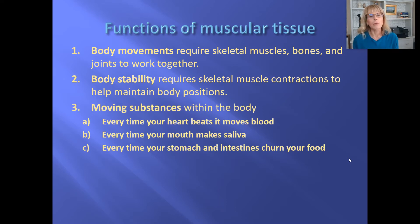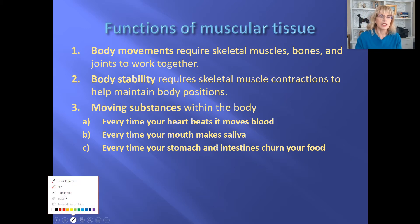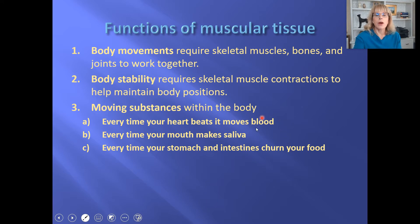But muscular tissue does so much more than what we think of as muscles like the biceps do. Muscle physiology allows muscles to move substances inside of the body. So every time your heart beats, that is muscle contraction that's pushing blood through all of your blood vessels. When your blood pressure goes up, it's because of smooth muscle making your blood vessels smaller. If there is saliva in your mouth, it is because there are little tiny smooth muscles in your salivary glands that are pushing the saliva into your mouth. When you are digesting your food, when your stomach and intestines are moving things around, that is also muscular tissue.